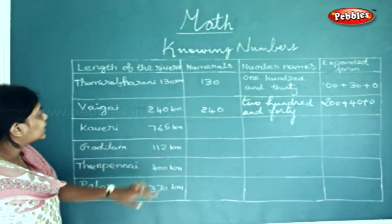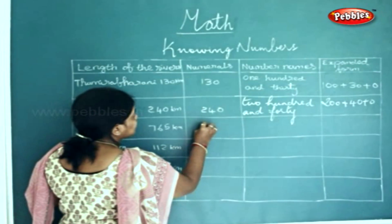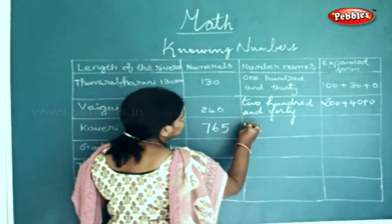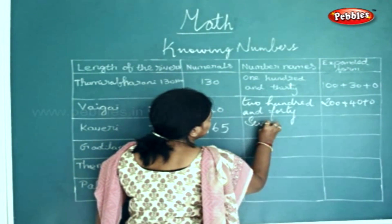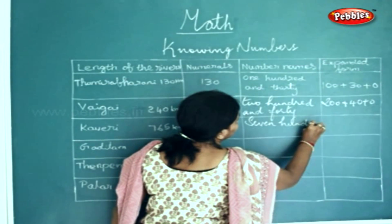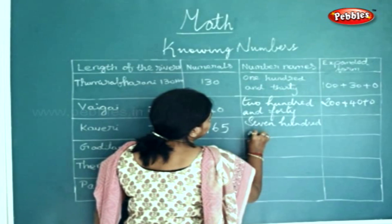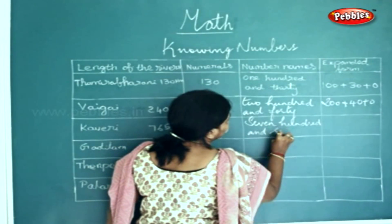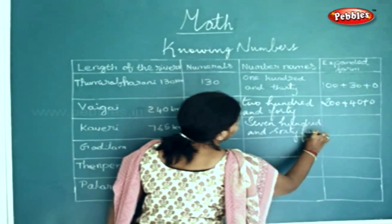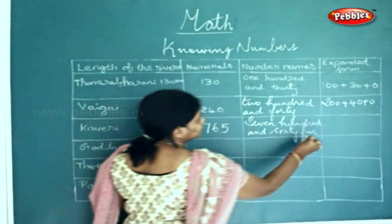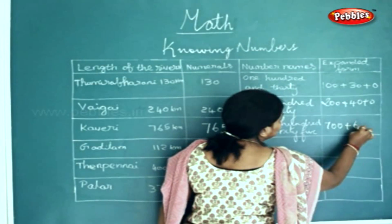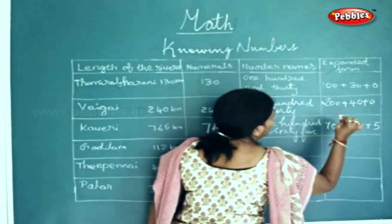In the same way, for Kaveri it is 765 kilometers. In numerals we will write it as 765. In number names we will write it as seven hundred and sixty-five. In the expanded form it would be 700 plus 60 plus 5.